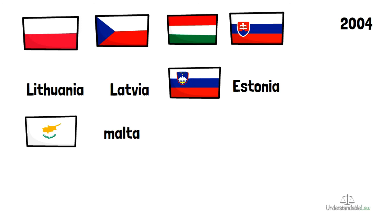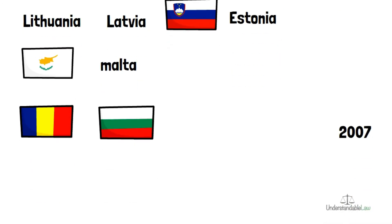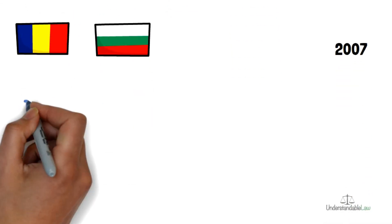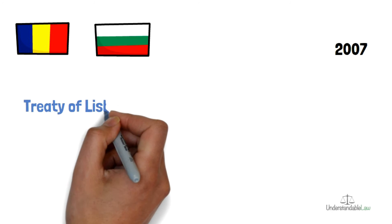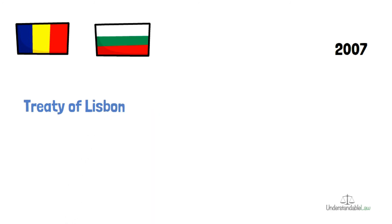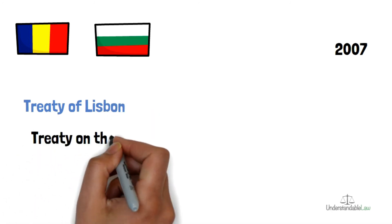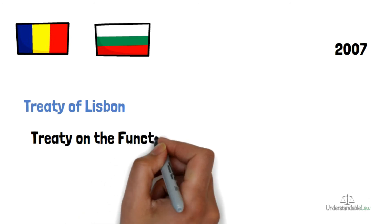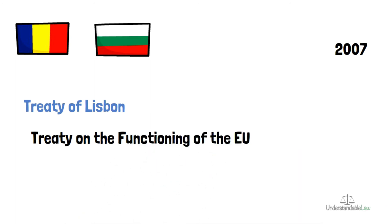Romania and Bulgaria joined in 2007. Also in 2007, the Treaty of Lisbon was signed with a view to renaming the EEC Treaty to its current name: the Treaty on the Functioning of the European Union. This convention entered into force in 2009.